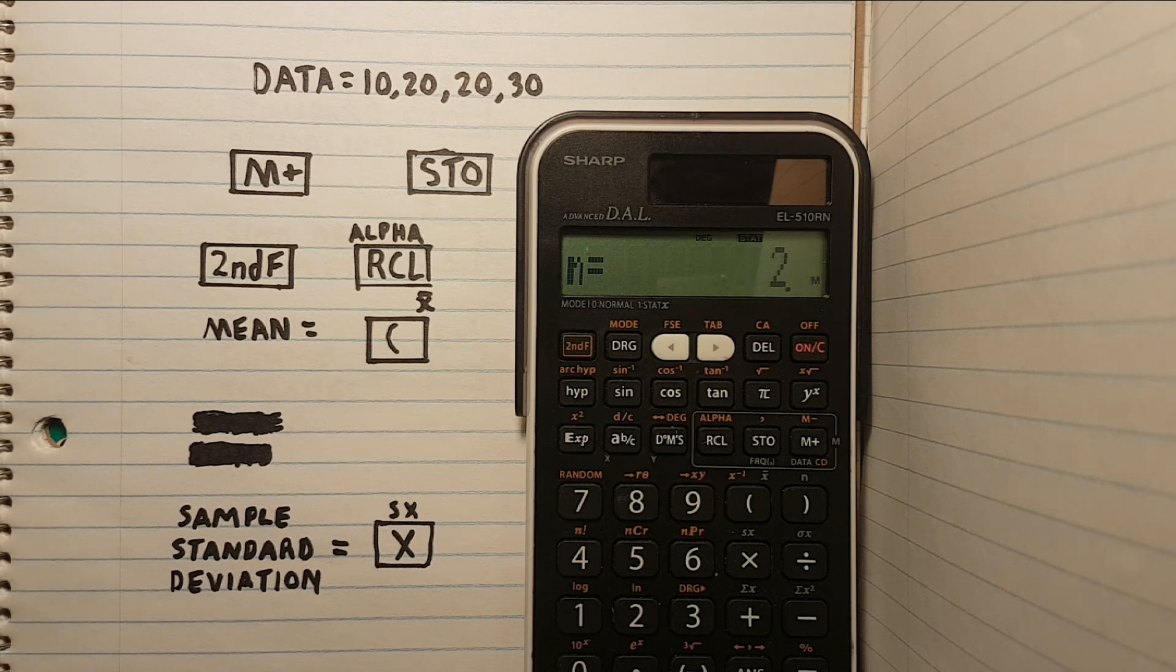Alright, let's do our next set of measurements, 20. But notice that we have two identical 20s in our data set. If we have multiple of the same number in our data set, we can enter them all at the same time by pressing the number, then hitting store.